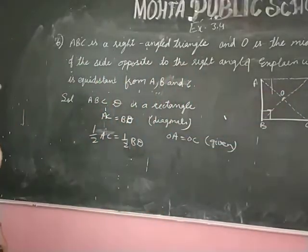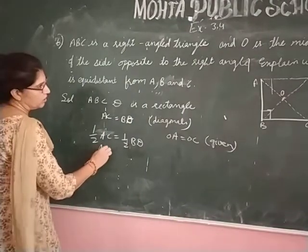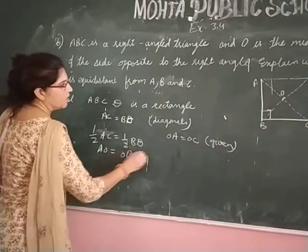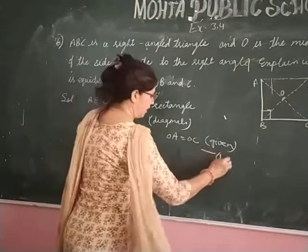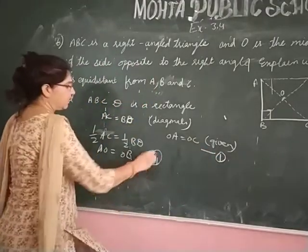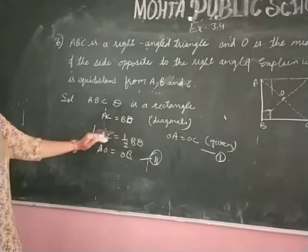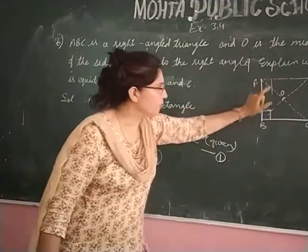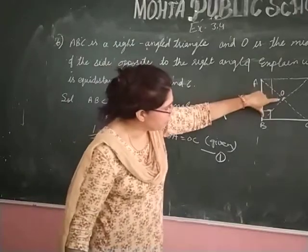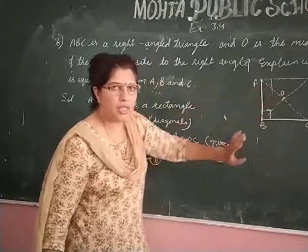So here we will write AO equals OB. Equation number 1. This is given. Second equation is coming. Is it clear to you? I took this portion as half of AC, and I took this portion as half of BD. Okay?